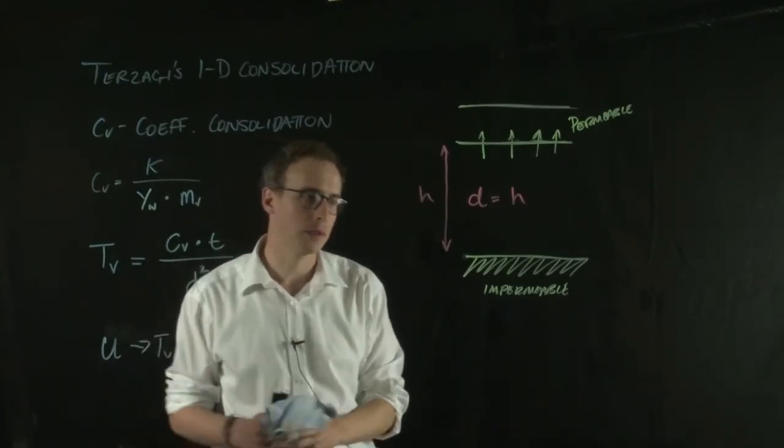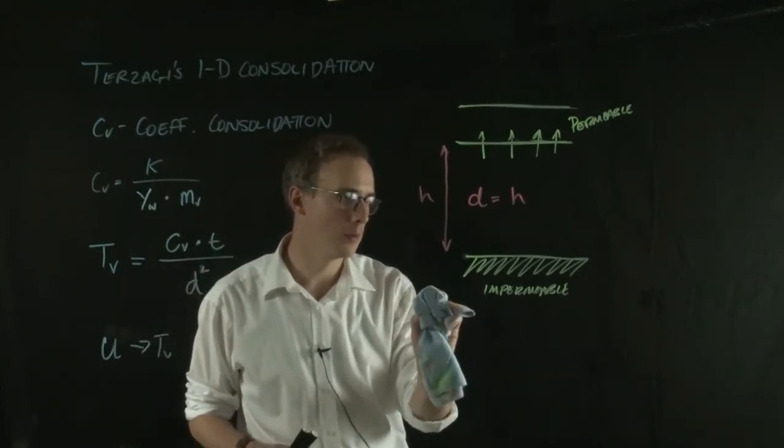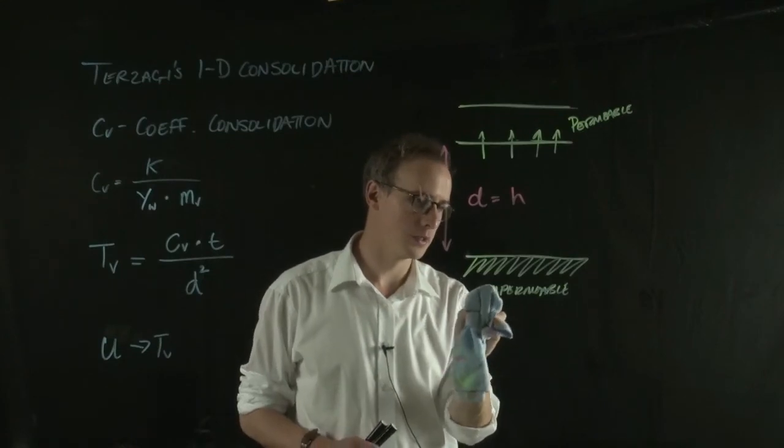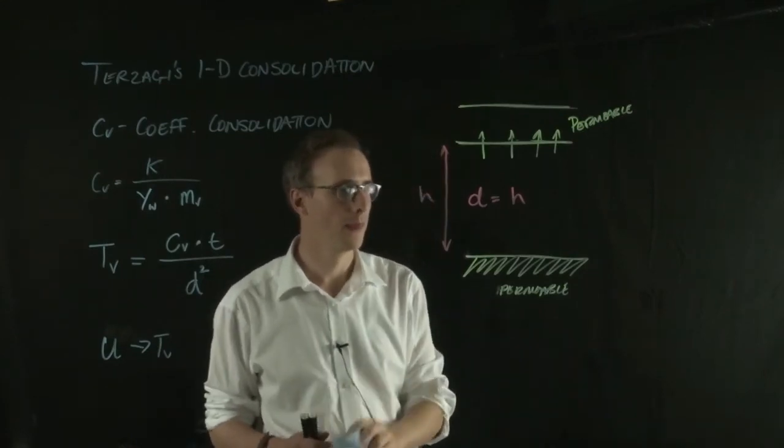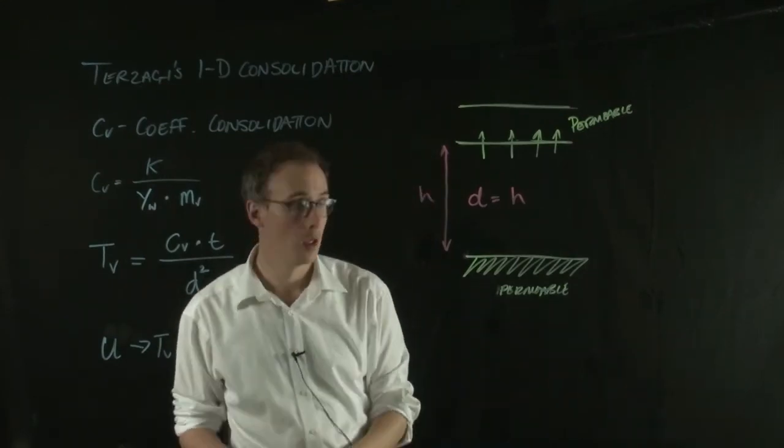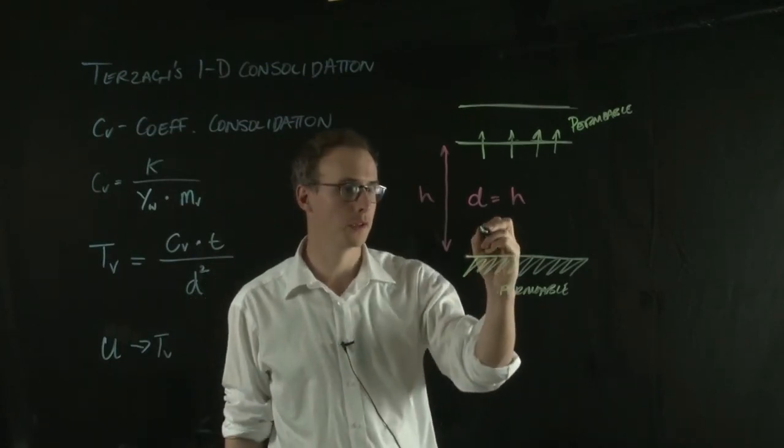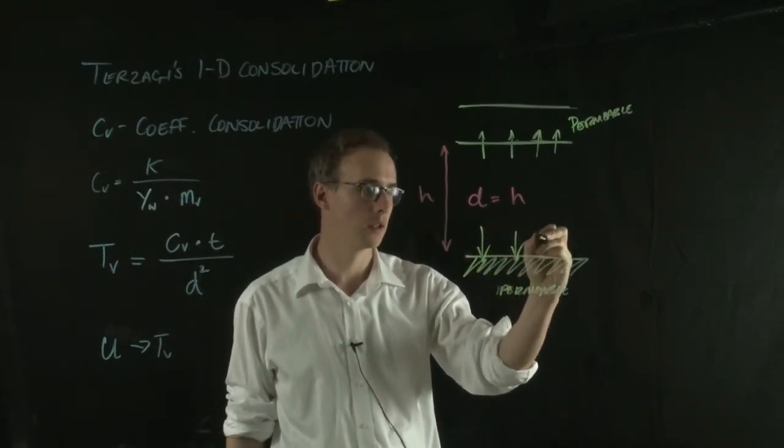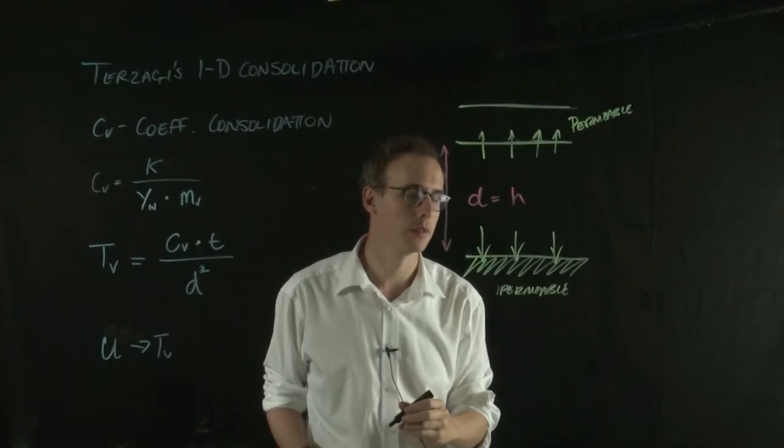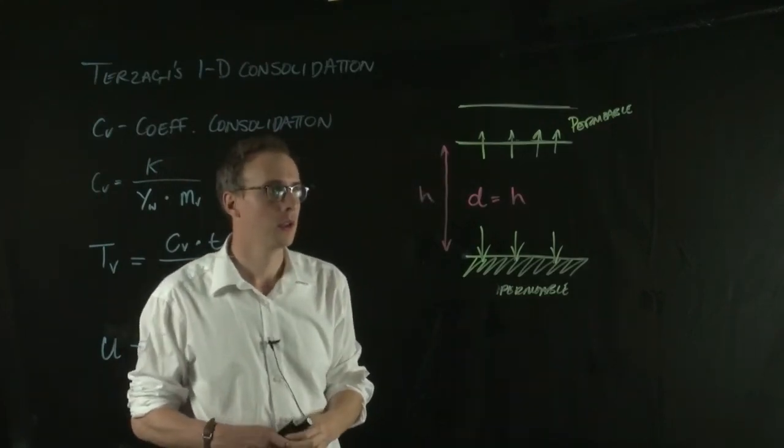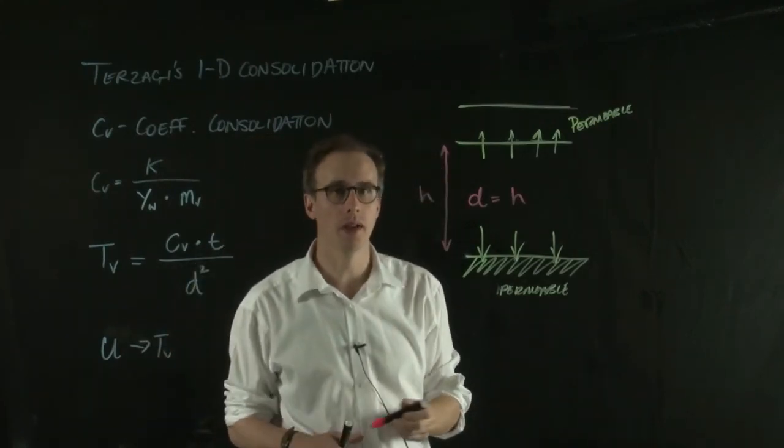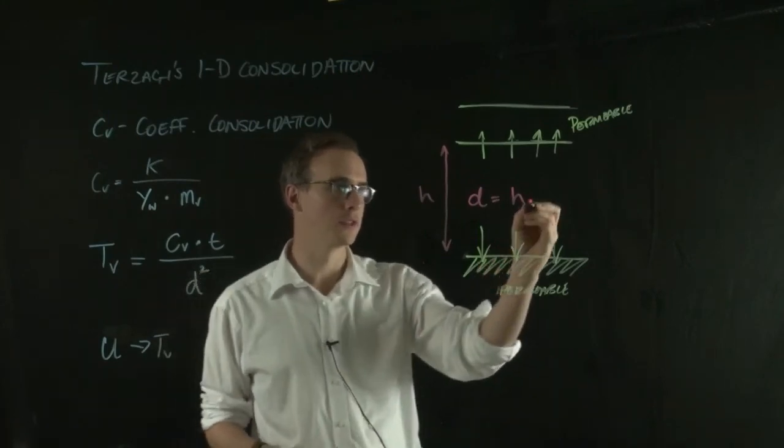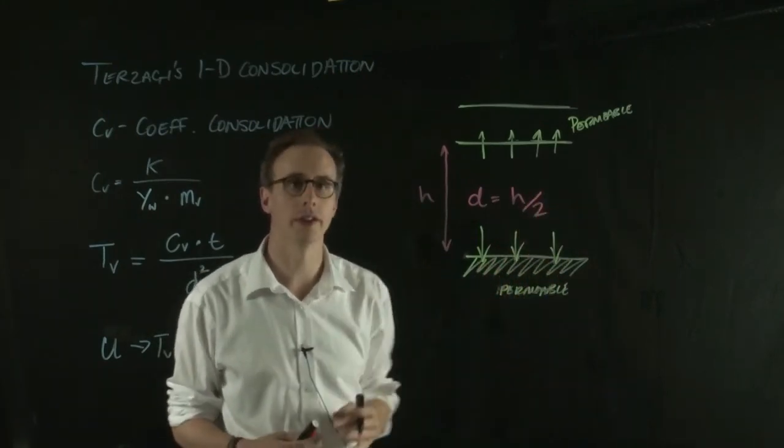An alternative example is if, instead, we had an impermeable bedrock, but this was now permeable, and water could flow out of both sides of the stratum, then our drainage pathway would be equivalent to H over 2. So, half the thickness of the layer.